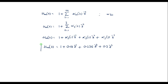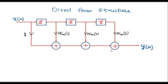Using this system function, we can draw the direct form structure. The block diagram has coefficients alpha_m(1) = 0.18, alpha_m(2) = 0.236, and alpha_m(3) = 0.3. This is the direct form structure. Thank you for watching.